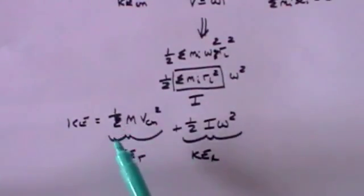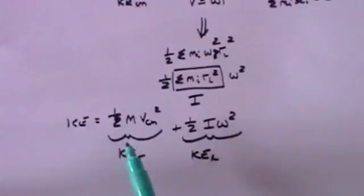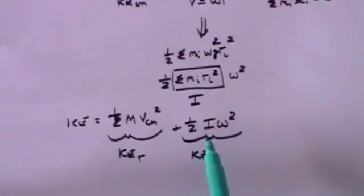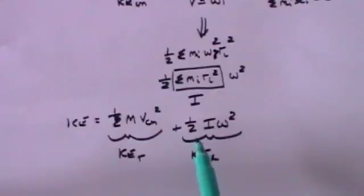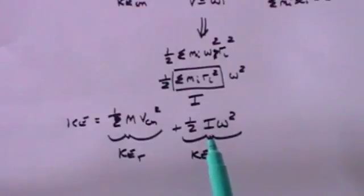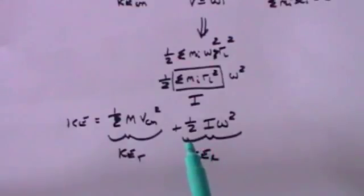We've established that kinetic energy is no longer simply half mv squared. You also have to account for the energy stored as a consequence of a body rotating — the rotational kinetic energy. This is, for example, the energy stored in a flywheel; a spinning wheel stores energy simply because it is rotating.